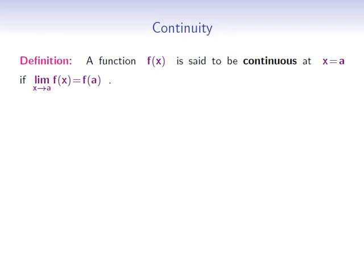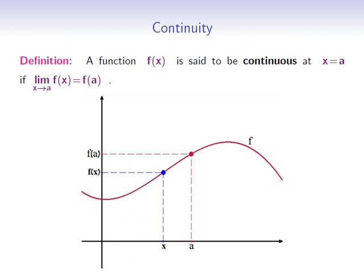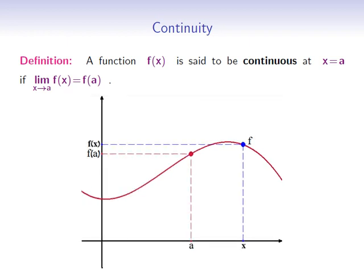The idea behind this definition is simple. If this is our function f, then f is continuous at a means that as x approaches a from either side, the corresponding point on the graph of f will approach the point a, f of a.